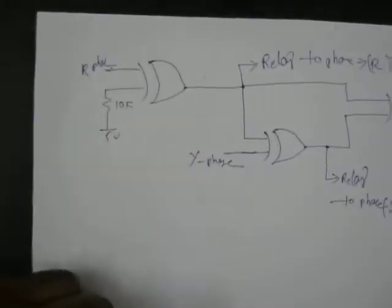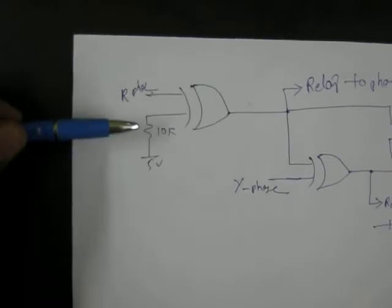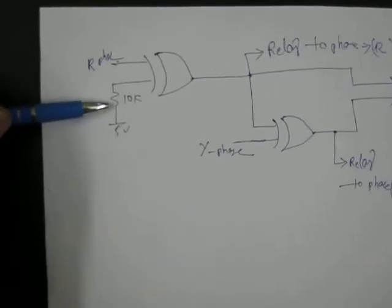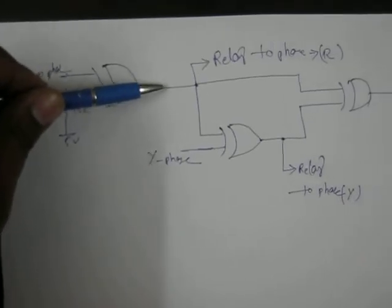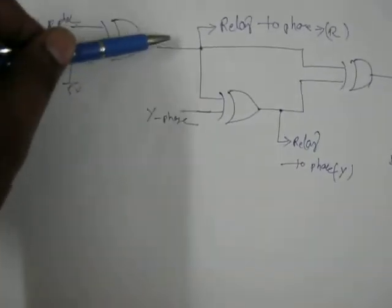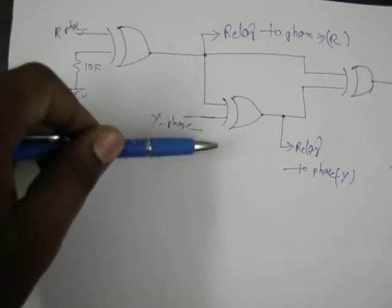You will see there are two inputs here. One is the red phase and another input is the 5 volts with 10K, and you will get the output. This will be given to the second gate, and the output will be given to the second gate. One of the inputs and another input is the Y phase.